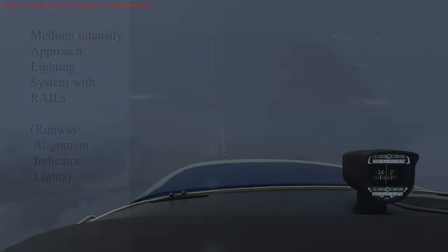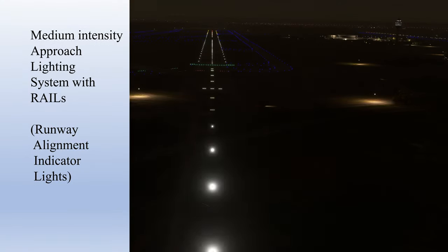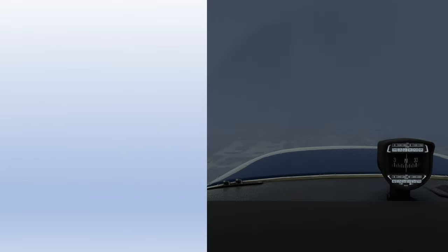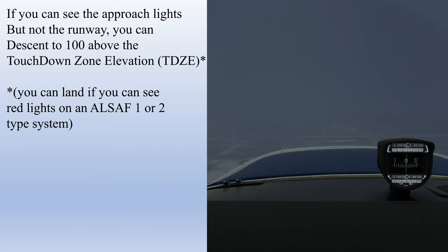The final ground-based component of an ILS is the approach lighting system, or ALS. The most common type on an ILS is the MALSR — a medium-intensity approach lighting system with runway alignment indicator lights — which looks like a bunch of white lights shaped like a T, with strobe lights sequenced to appear like they're moving toward the runway, sometimes called the rabbit. There are two important things to remember about approach lights: first, if you get the approach lights in sight but not the runway, you can descend below the decision altitude — but only to 100 feet above the touchdown zone elevation — until you get some part of the runway environment in sight.